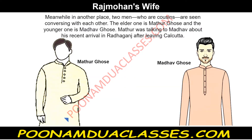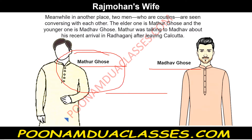Meanwhile, we are acquainted with two more characters: Mathur Ghosh and Madhav Ghosh. In one other place, two cousins are seen talking to each other — the elder one is Mathur Ghosh and the younger one is Madhav Ghosh. Mathur was talking to Madhav about his recent arrival in Radha Ganj after leaving Calcutta.